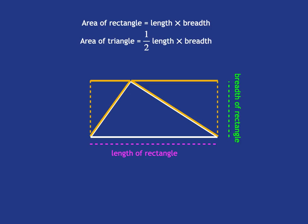So let's just have a look that length of the rectangle is really just the base of the triangle, and the breadth of the rectangle is really just the height of the triangle. And so we get our formula for the area of the triangle.